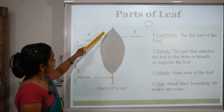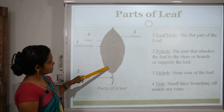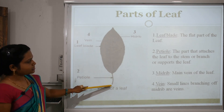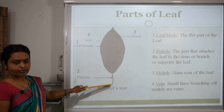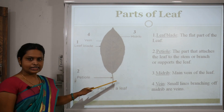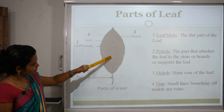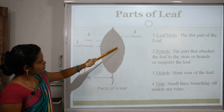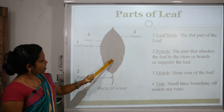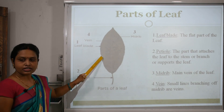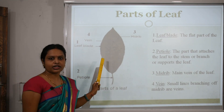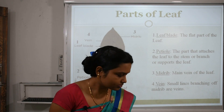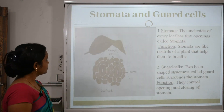The flat part of the leaf is called the leaf blade. The petiole is the part that attaches the leaf to the stem or branch and supports the leaf. The midrib is the main vein of the leaf. The small lines branching off the midrib are called veins. These veins transport food, water, and minerals to the leaves of the plant.